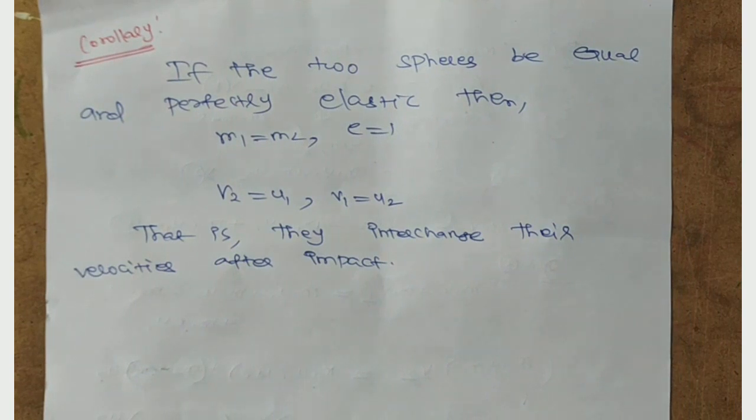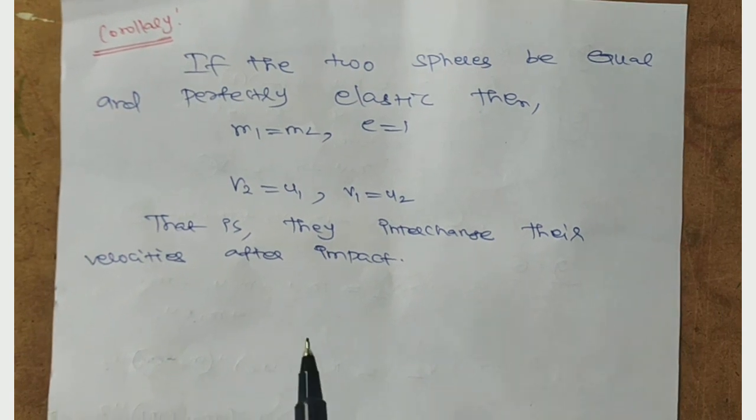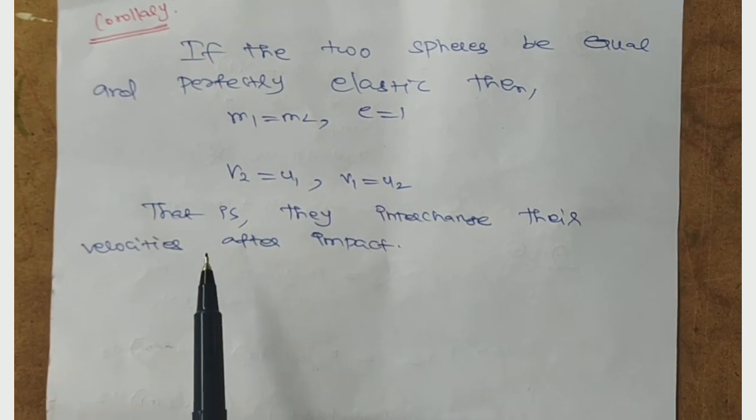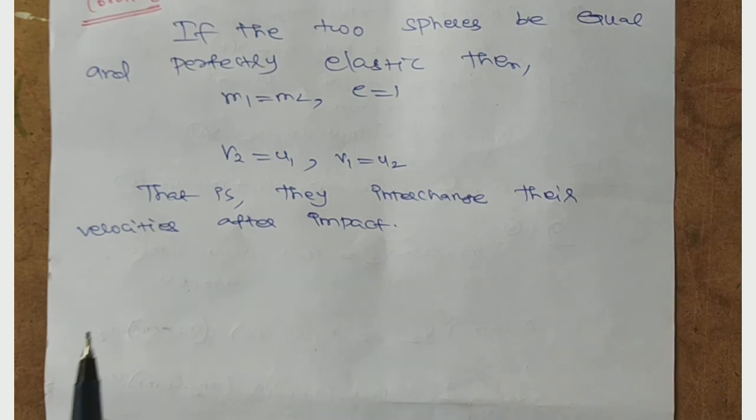If the two spheres be equal and perfectly elastic, M1 equals M2, e equals 1, then V2 equals U1, V1 equals U2. The velocities interchange after impact.